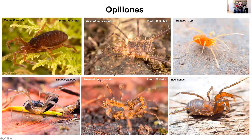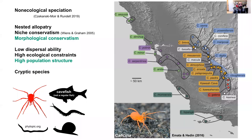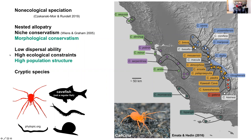The taxa I study are a group of arachnids called opiliones. Many opiliones come with a particular set of biological characteristics. They tend to undergo non-ecological speciation, which includes nested allopatry — meaning distinct genetic lineages rarely, if ever, overlap in geographic space, from populations all the way up to species. They also show niche conservatism, which leads to morphological conservatism across species boundaries, as well as low dispersal ability and high ecological constraints, meaning very specific micro-habitat preferences.